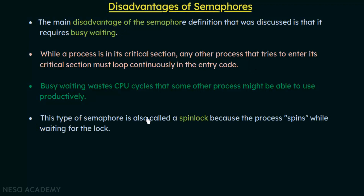This type of semaphore is also called a spin lock because the process spins while waiting for the lock. When a process is not able to enter its critical section, it loops inside the while loop and hence it is called a spin lock. The main problem is that it wastes precious CPU cycles that could have been used productively by other processes.